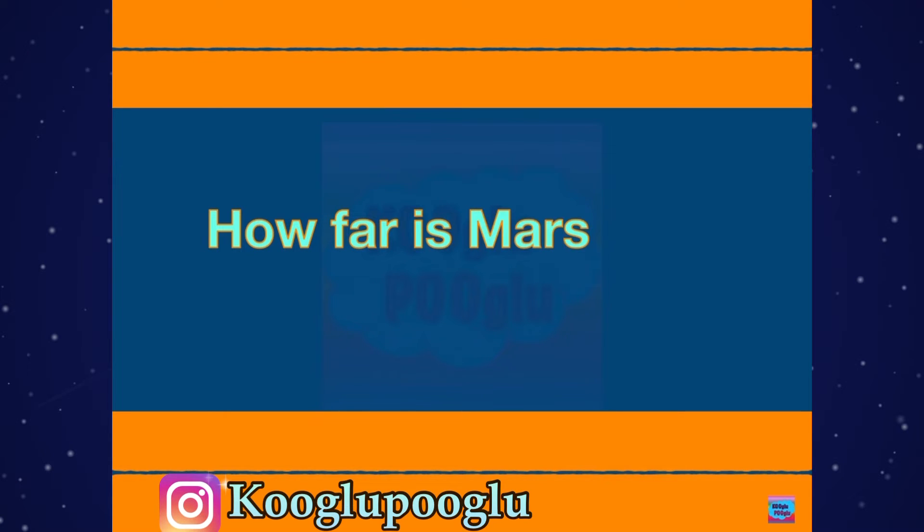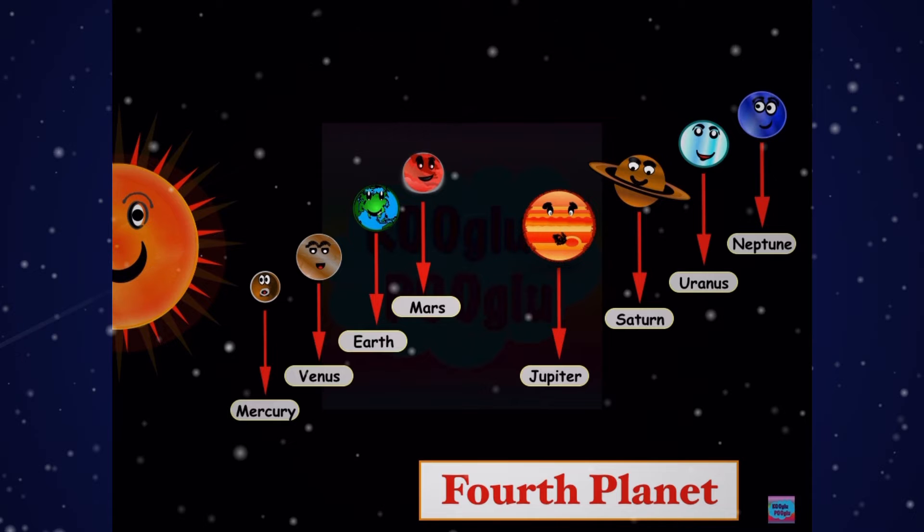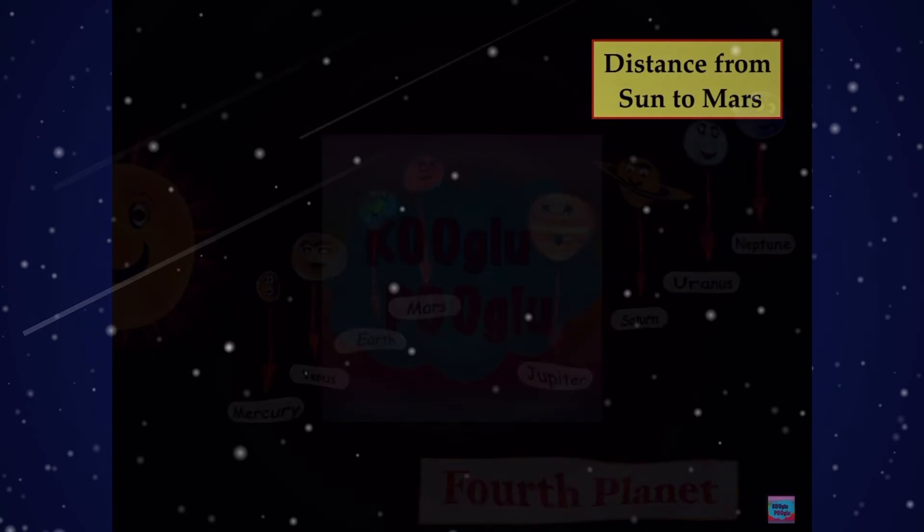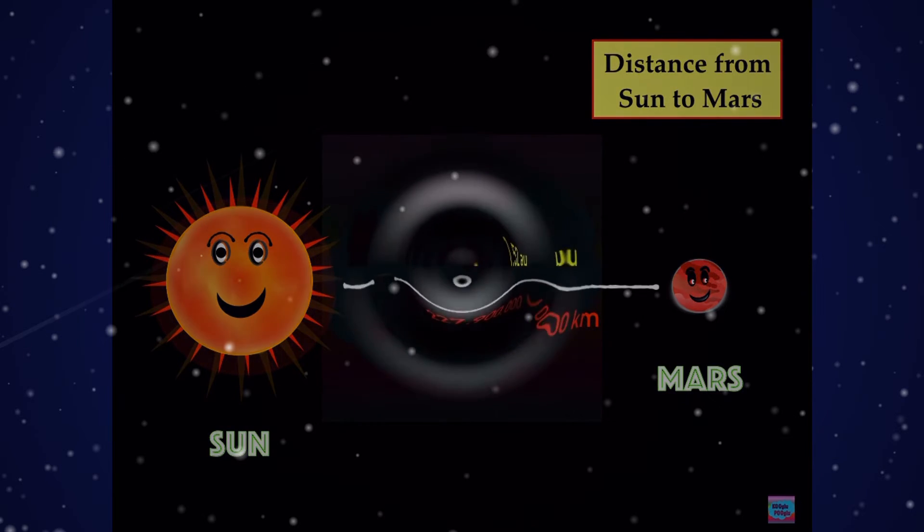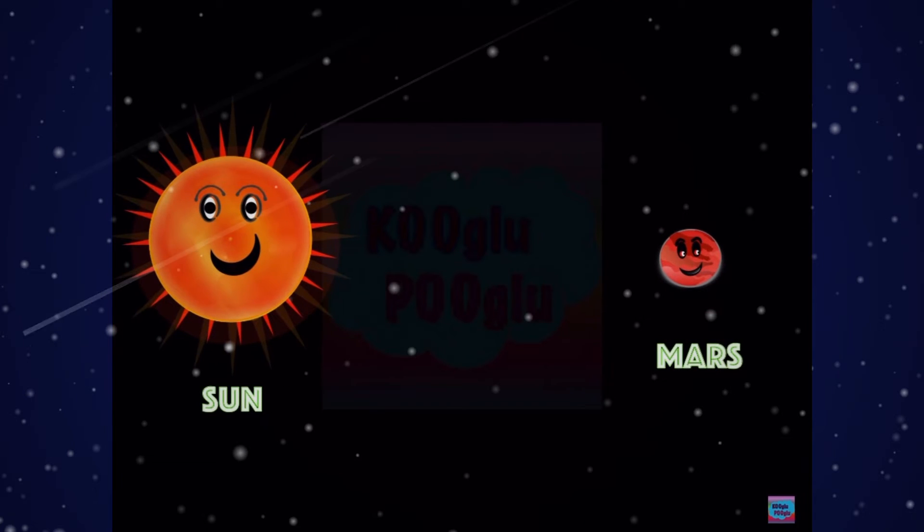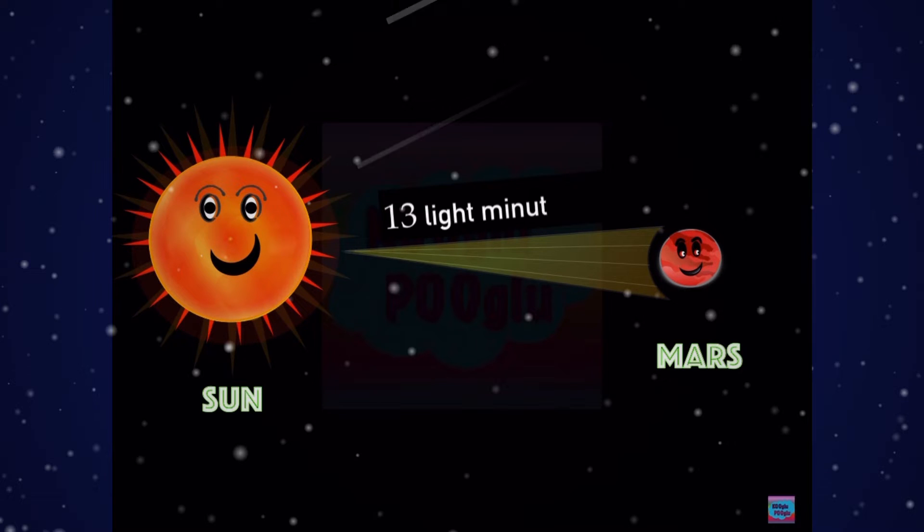How far is Mars from the Sun? Mars is the fourth planet from the Sun. The distance from Sun to Mars is 1.52 AU, or almost 228 million kilometers. It takes around 13 light minutes for sunlight to reach Mars.